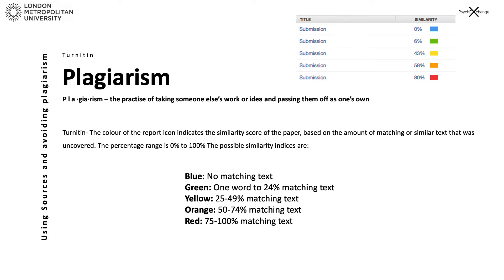Before moving on to using sources appropriately, it might be a good idea to have a look at Turnitin. As you know, at London Met all work is submitted through Turnitin. Turnitin checks your work for similarity — in other words, how much of your work is similar to other texts that already exist. Essentially, this is looking at whether you have plagiarised.